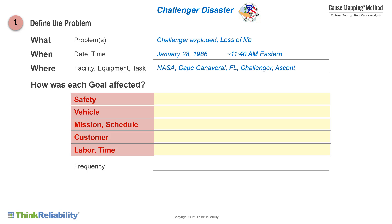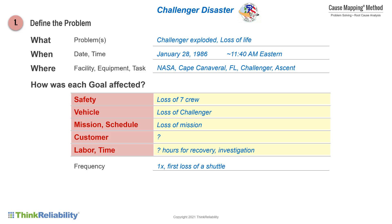On the Challenger disaster, the problem was obviously that the Challenger exploded, but there's also a loss of life — both can be written down. There's the date and the time, and the location where the incident occurred. In terms of impact, there's a loss of life, a loss of the entire orbiter, and then the impact to the mission, the customer payload, and the entire investigation. This was the first time that a shuttle had been lost.